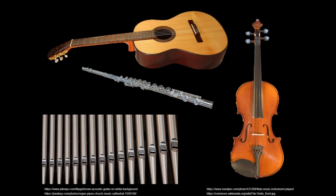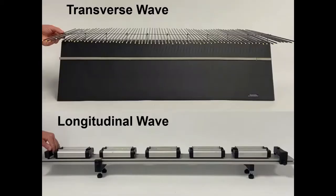Another area of physics that we can study is the study of waves, and musical instruments totally rely on waves to make the music that they create. Musical instruments often fall within two categories: strings, where there are vibrations occurring on a string, or tubes, like the flute and the organ, that have air vibrations inside of tubes. There are also percussions and stuff, and we will look at that as well.